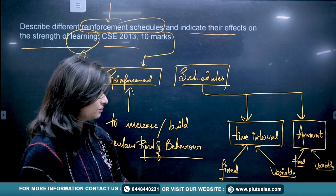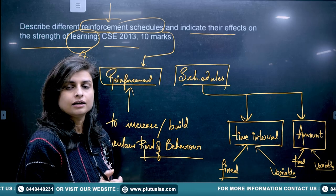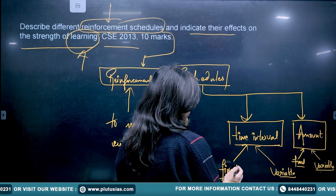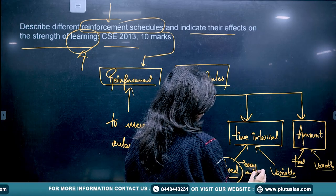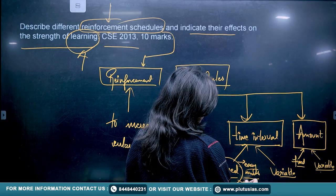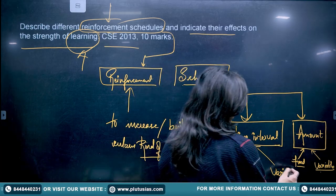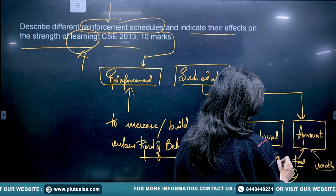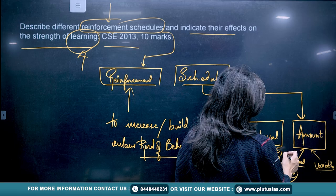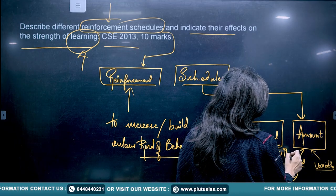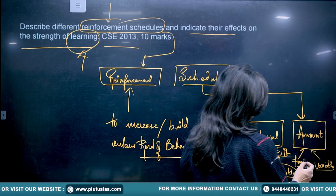For example, if an employer is introducing perks at a fixed interval of time — say every month — then the time is fixed. When it is variable, it could be any time the employer feels appropriate — it could be the second month, the fifth month, or no month at all. That is what makes it variable.